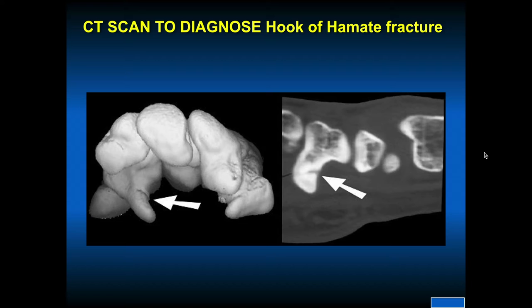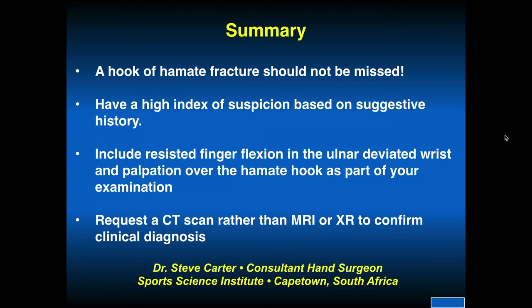The excision of this hook typically is what has to be done. In summary, hook of the hamate fracture should not be missed. Have a high index of suspicion based on history. Include resistive finger flexion in an ulnar deviated wrist and palpation over the hook of the hamate as part of your exam. Request a CT scan rather than an MRI for a hook of the hamate or bone problem to confirm the clinical diagnosis. Special thanks to Dr. Steve Carter, Cape Town, South Africa, for this information.